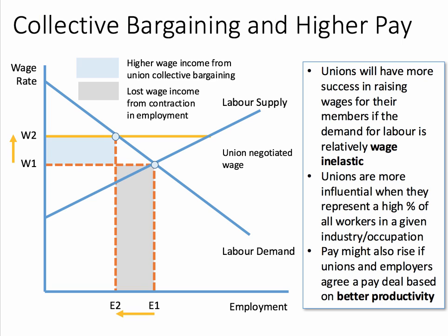For example, an employer might say: 'We'll pay you 4% more this year, providing you can guarantee an increase of, let's say, 3% in labour productivity.'